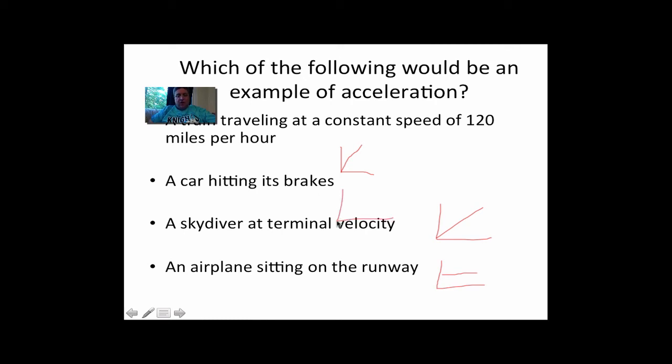Skydiver at terminal velocity means it's going the same speed. Airplane sitting on the runway, not moving at all. If I've got a straight line, it's not that. Car hitting its brakes, it's going to look like this: I'm going along, boom, I stop. At that point, there's an unbalanced force causing an acceleration, causing it to slow down. So the right answer is a car hitting its brakes.